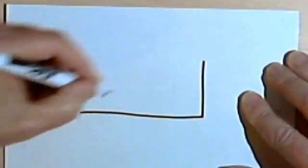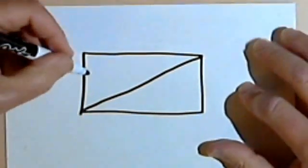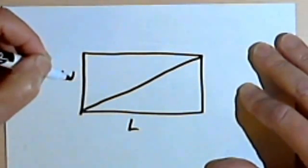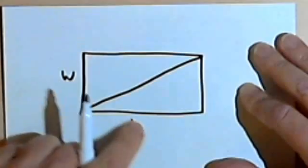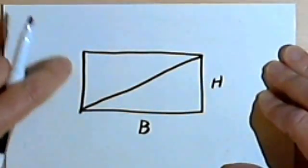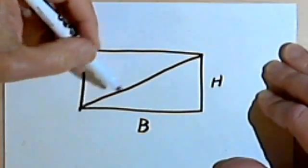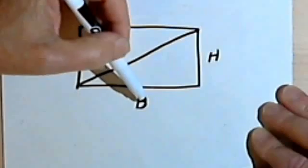Let's look at triangles. One way to think about a triangle is that a triangle might be one-half of a rectangle. Remember, the area of the rectangle was the width times the length. For a triangle, we usually call the bottom of the triangle the base, and we call the vertical dimension the height. So I'm using h and b, or height and base, instead of length and width.